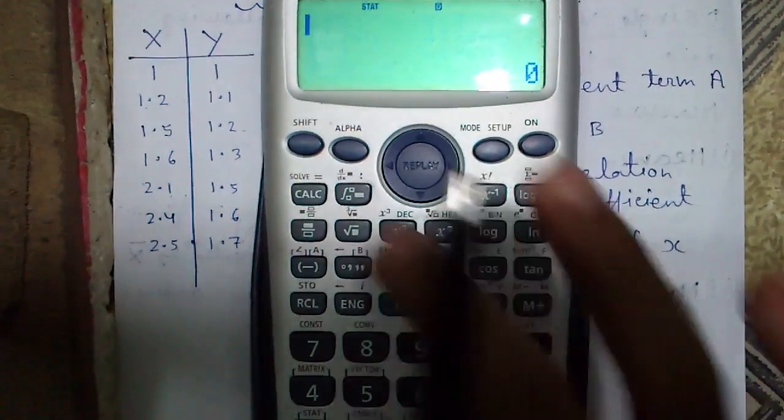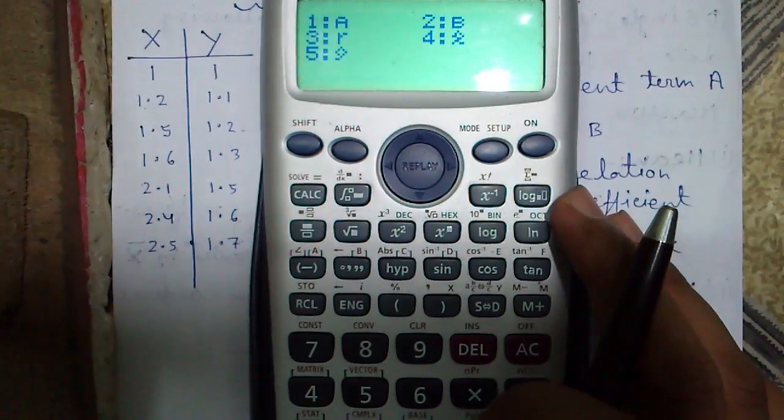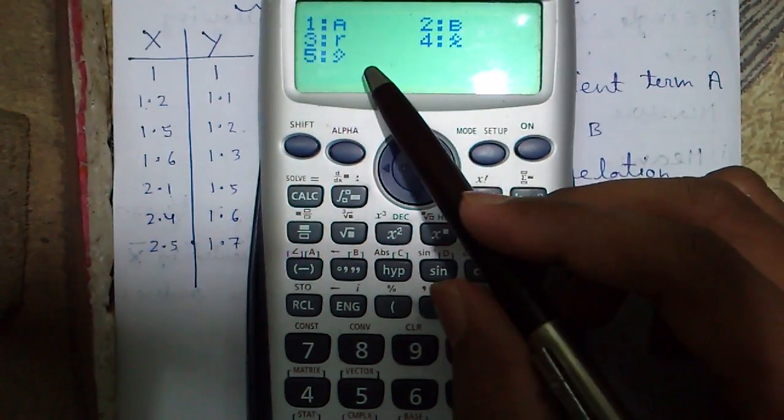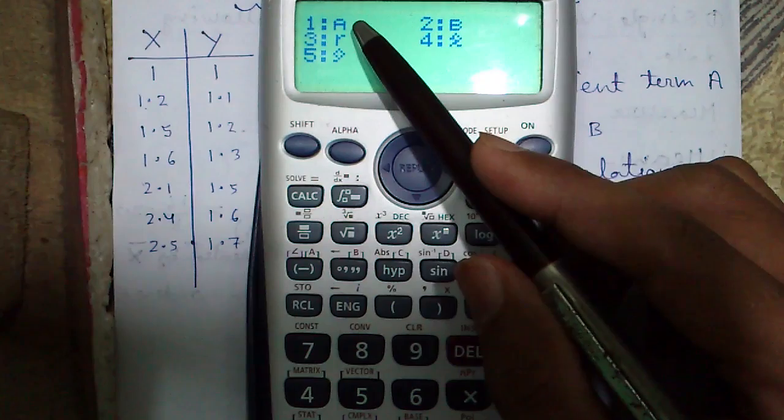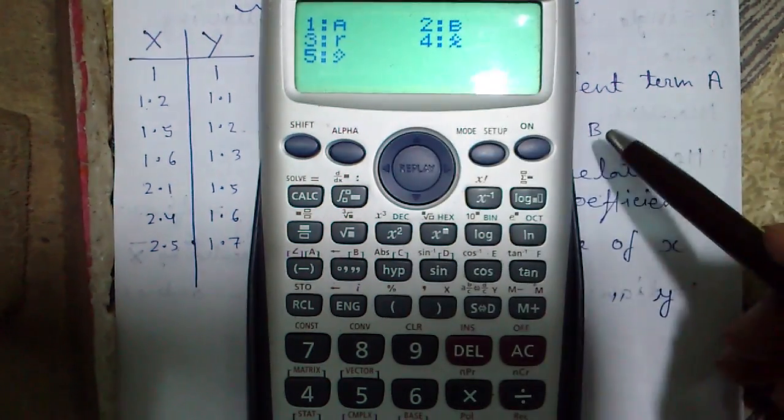And in distribution, number 7 mode, regression mode, you can find out the a, b, r like this.